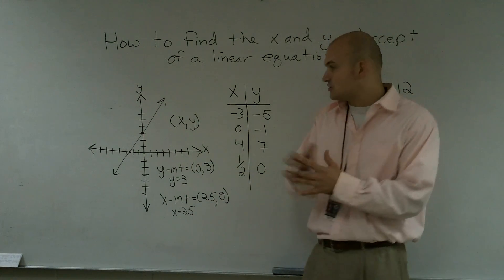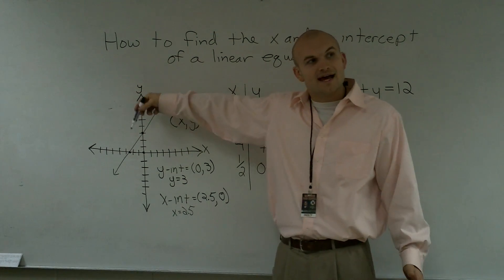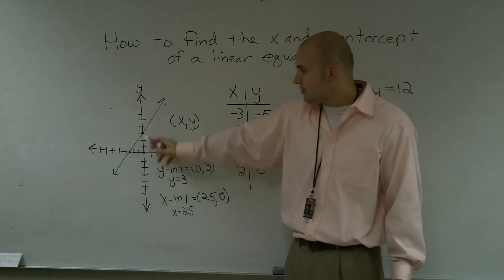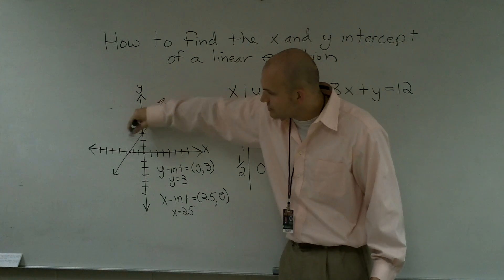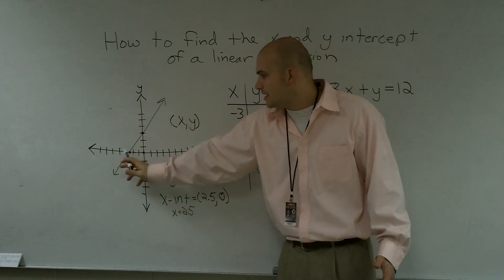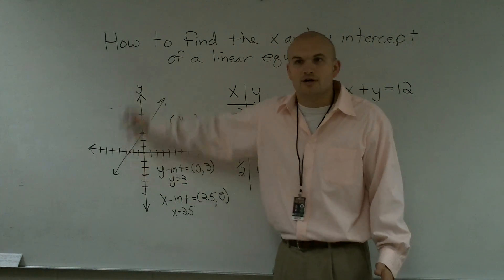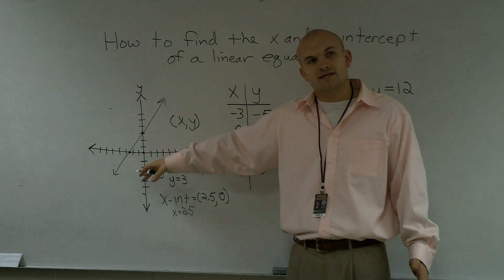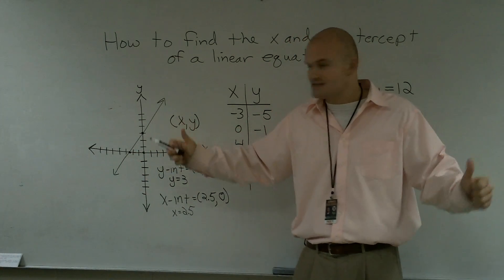So you've always got to remember, if it's crossing the line, one of the x or y values is going to be 0. So right here, my x is 0. I'm not going left or right at all. And over here, where it crosses the x-axis, I'm not going up or down. It's on the line, so the value is 0. Does that make sense?